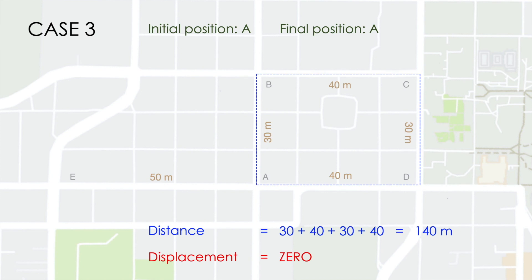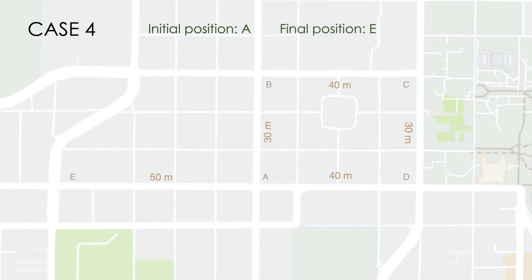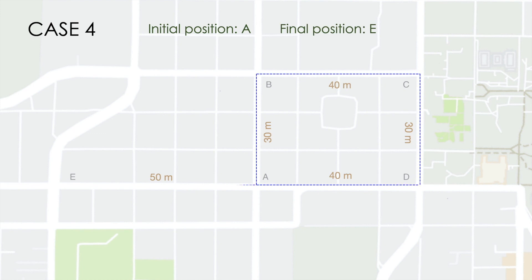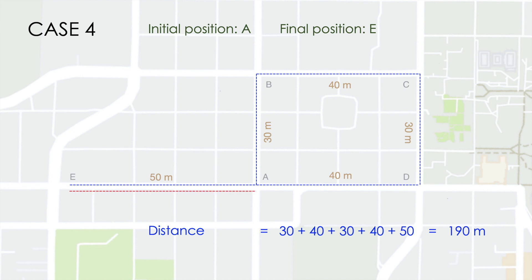Now let us look at another example. In this example, our initial position remains A and our final position is now E. So the distance travelled is from A to B to C to D and then to E, and that distance would be equal to 190 metres. Now, the body's displacement is towards the left, i.e. in the opposite direction, and therefore the displacement is equal to –50 metres.